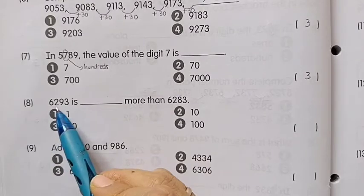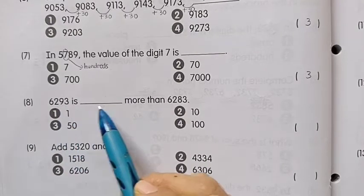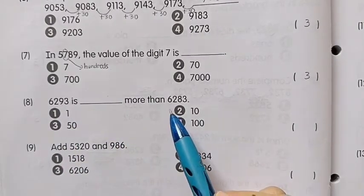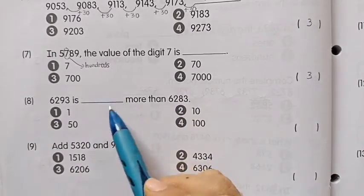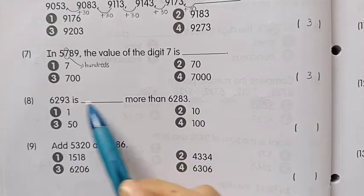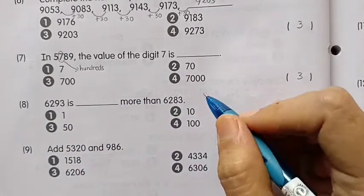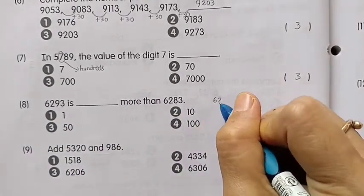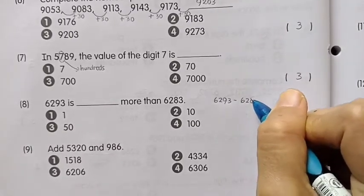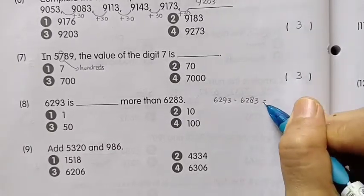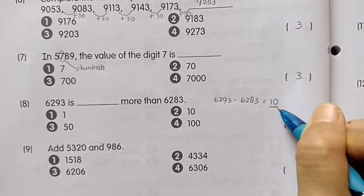Number 8: 6293 is how much more than 6283? To find this, we subtract 6283 from 6293, and the answer is 10. Number 2.